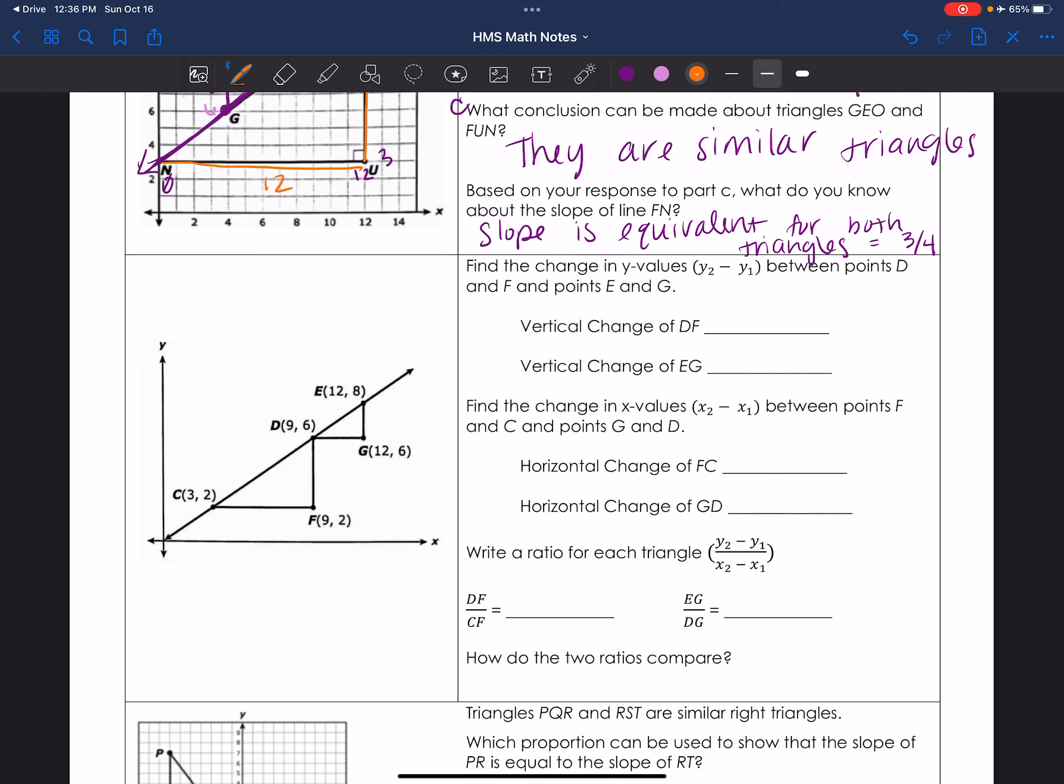Which is quite beautiful if you ask me. So find the change in Y values, Y2 minus Y1, between points D and F and points E and G. So the vertical change between D and F. I am looking at the Y coordinates, D and F. So this is 6 minus 2, which equals 4. And then the vertical change in E and G. So again, the Y coordinates, 8 minus 6, which is 2. Find the change in X values, X2 minus X1, between points F and C. So here's 9. Here, let me use another color. 9 and 3, which equals 6. And then the horizontal change of G and D. So this is 12 and 9. Cool. Boom shakalaka.